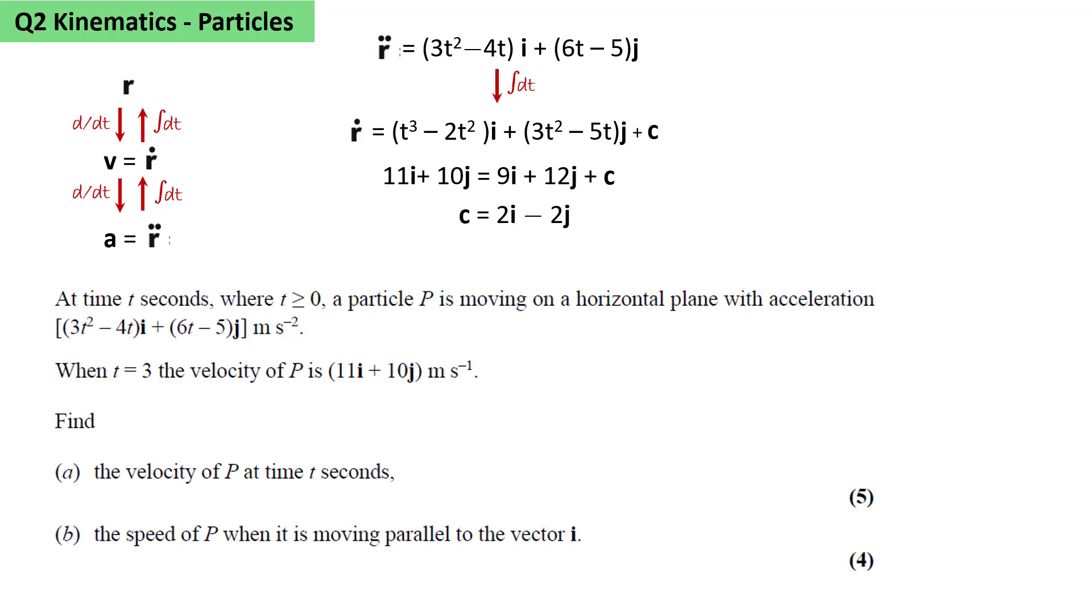We substitute back into the expression for ṙ, and we get ṙ = (t³ - 2t² + 2)i + (3t² - 5t - 2)j. The 2 comes from the constant of integration, and the -2 in the j component also comes from the constant of integration.